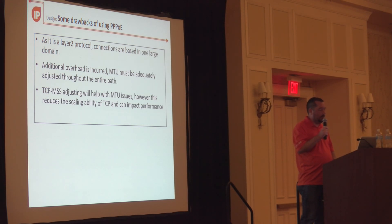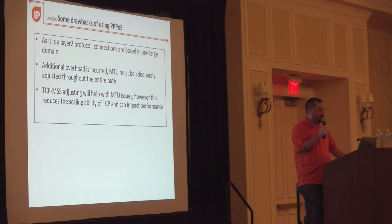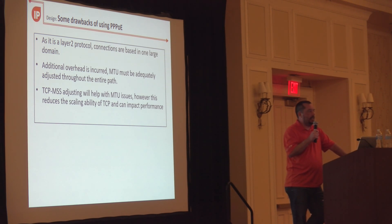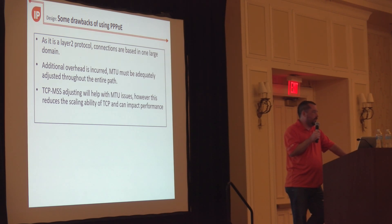At the layer 2 level it's one big domain. Some of the drawbacks to PPPoE are that you do incur overhead, so your MTU must be set correctly. If it isn't, you can get away with it by using TCP-MSS adjust, which will adjust the MTU as needed.